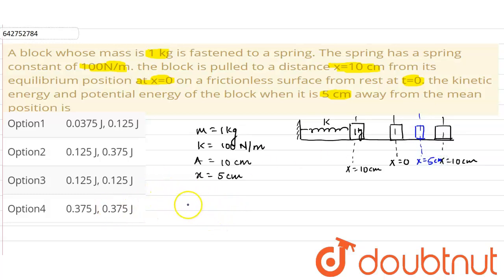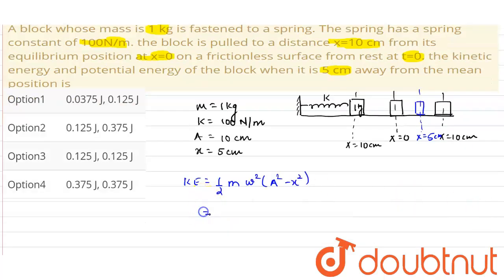Now the kinetic energy is given as half m omega square times a square minus x square. Now we know all the values, substitute here: mass is 1 kg, omega is under root of k by m, or what we can say is k by m is omega square times a square minus x square.